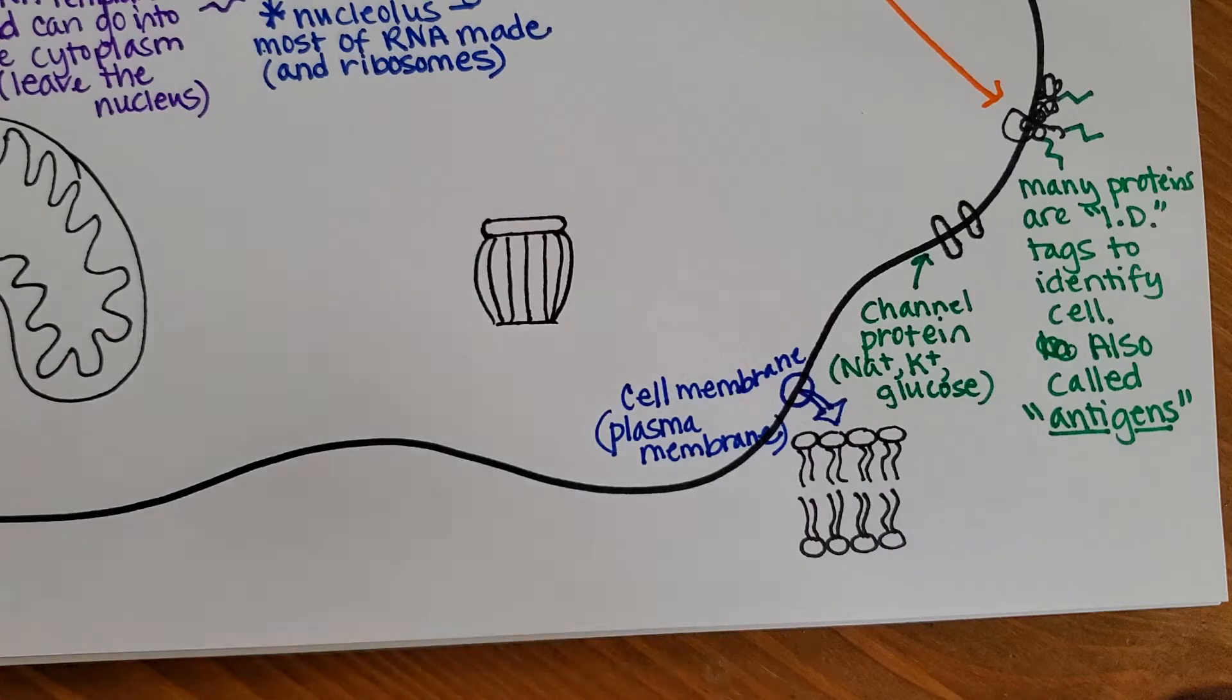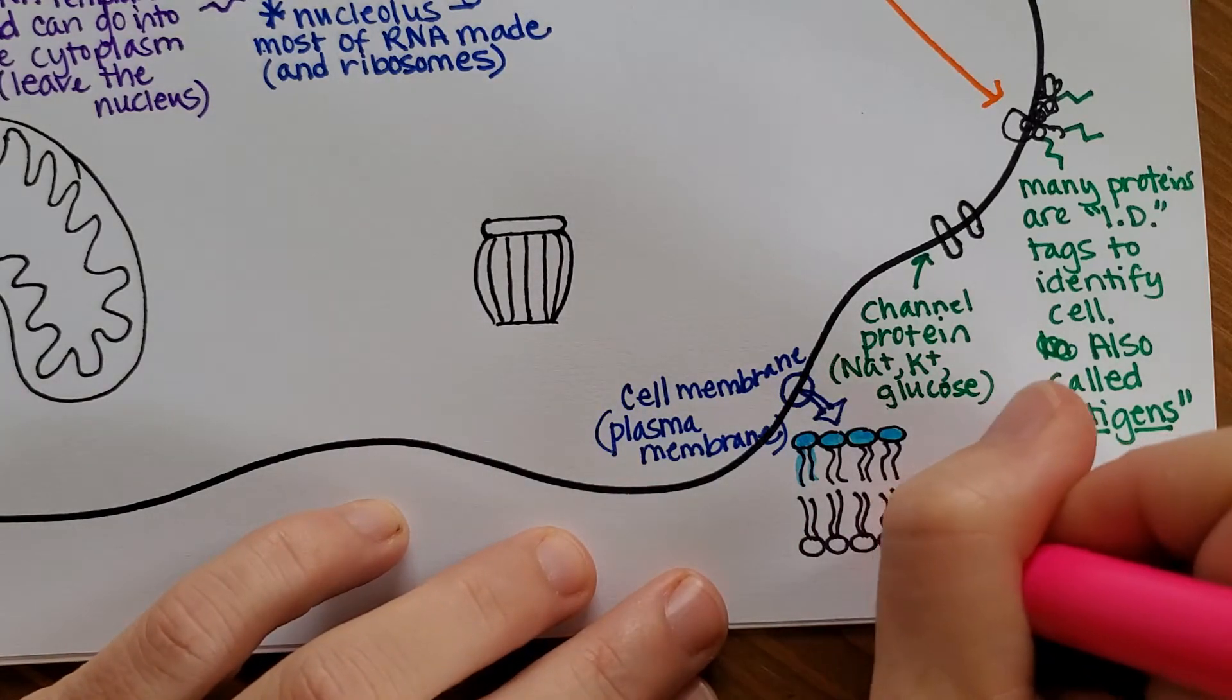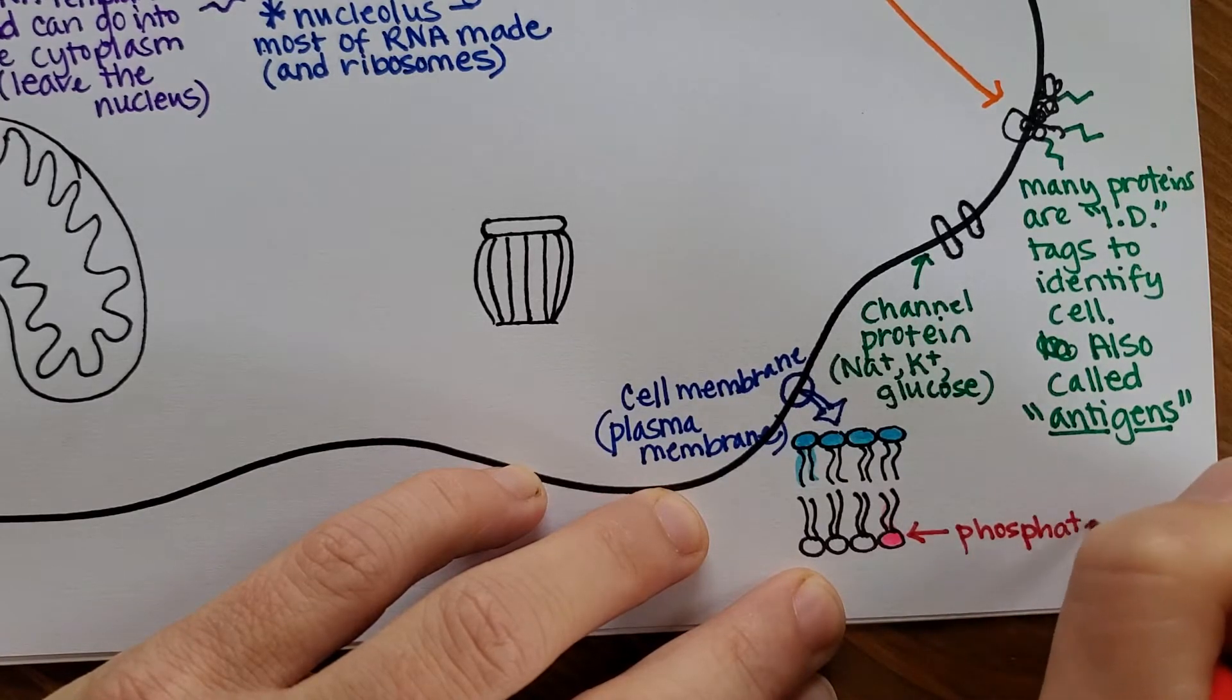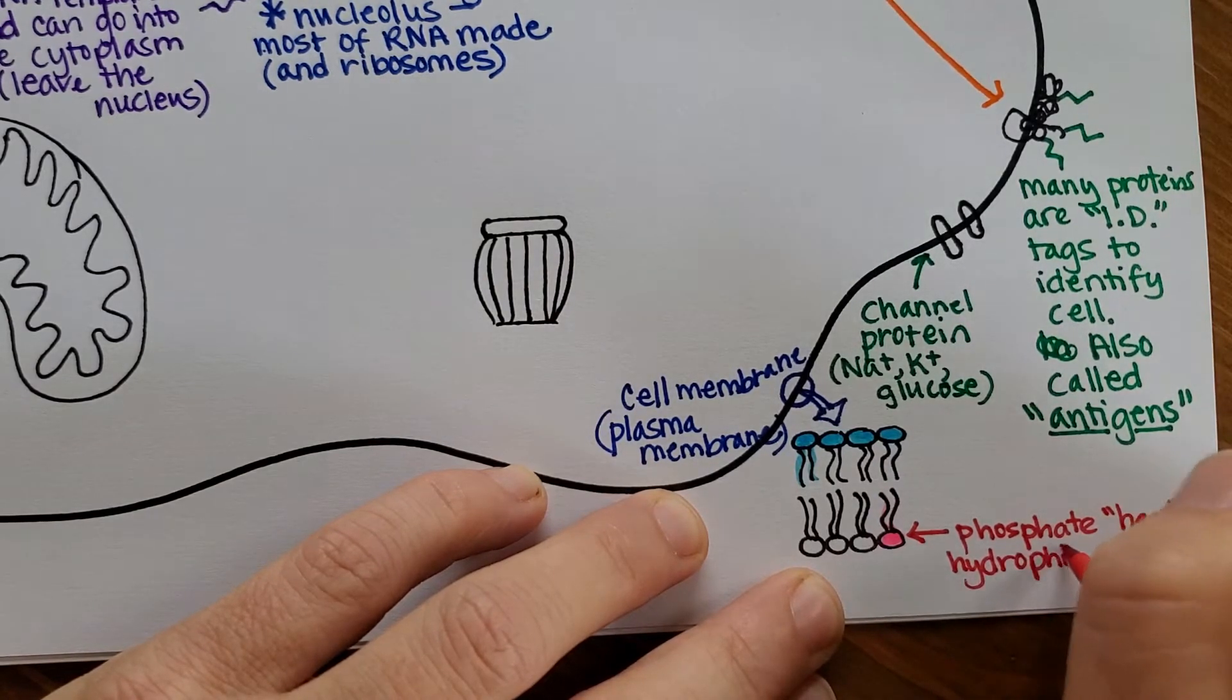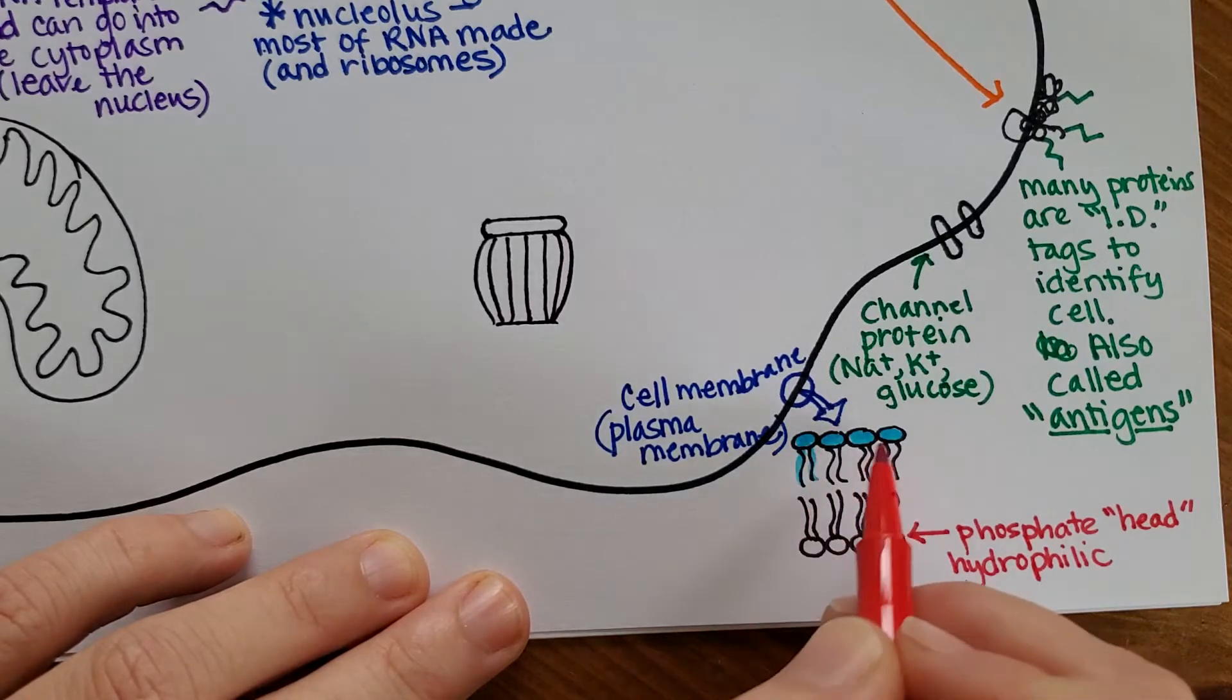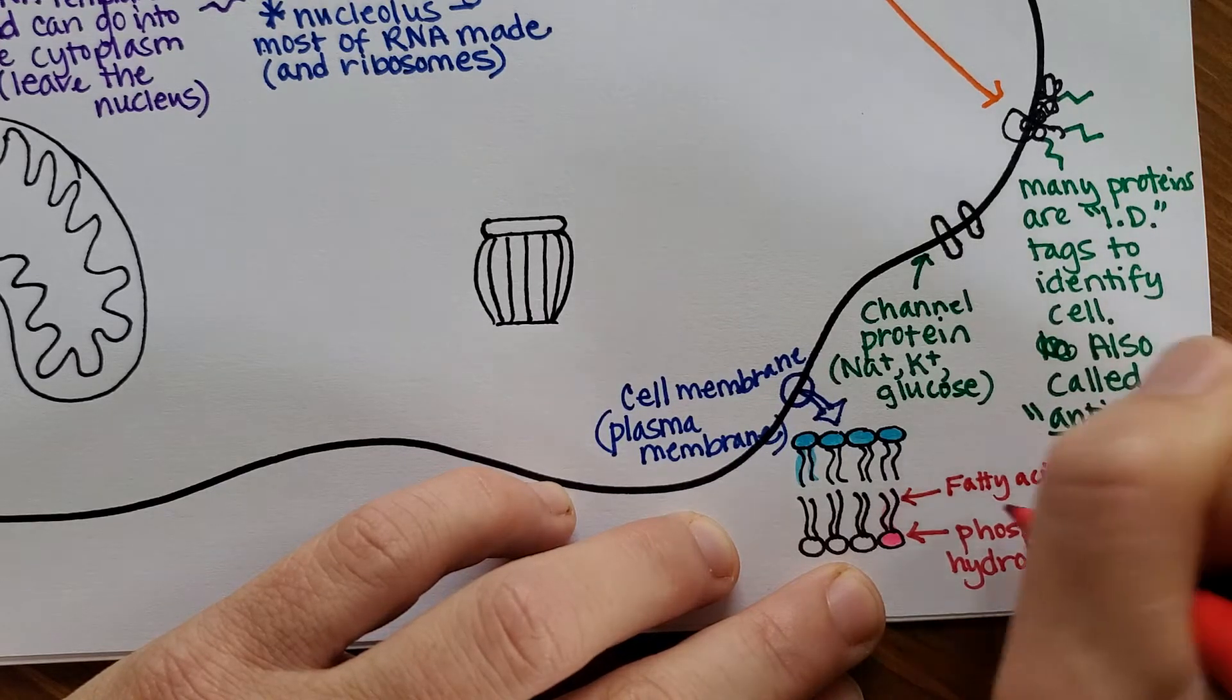If you see cell membrane or plasma membrane, it's referring to this and what it's made up of are phospholipids. Here's one phospholipid with a head and a tail. And that head is hydrophilic, meaning that it likes the water and the cytoplasm. This is a watery environment inside and outside the cell. And then these tails that are called fatty acid tails, they hate the water. They fear it.